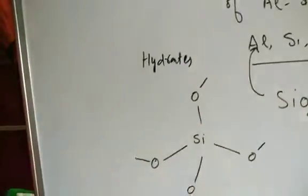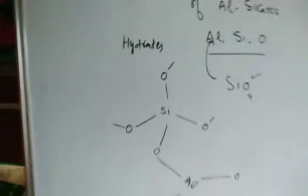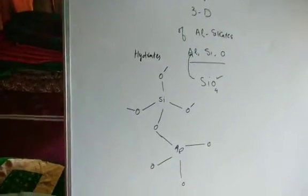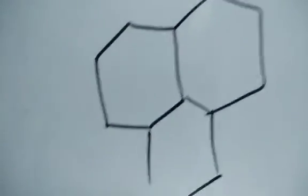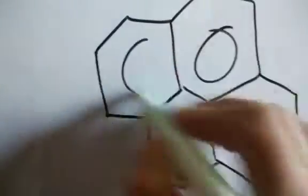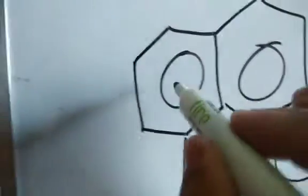That's why we call it a 3D network of aluminium silicates. The overall negative charge generated is balanced, usually by sodium. That's why one of the most commonly used zeolites is sodium aluminium silicate. This aluminium silicate forms a honeycomb structure with pores inside.